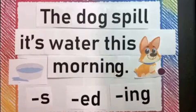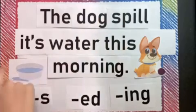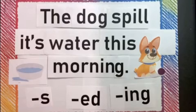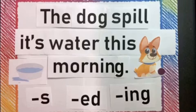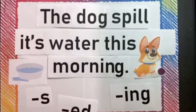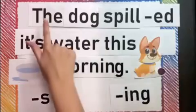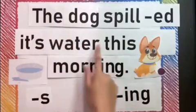Let's focus on the word spilled. Our sentence is: the dog spilled its water this morning. What ending will we be using to make it past tense, since we know it happened this morning? We're going to put ED. So our ending is ED — the dog spilled its water this morning.